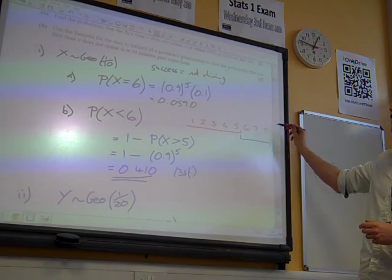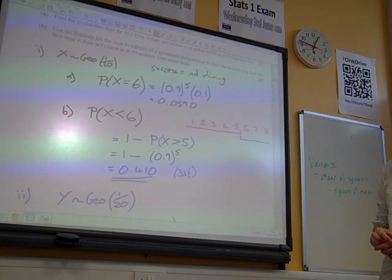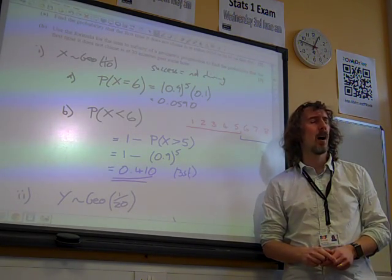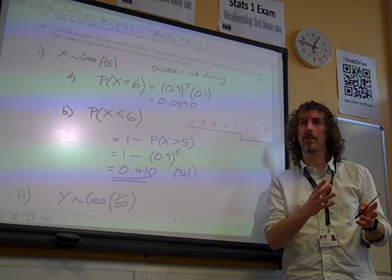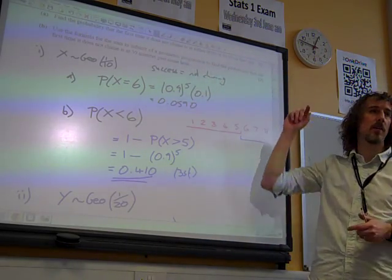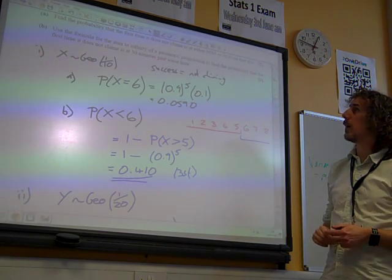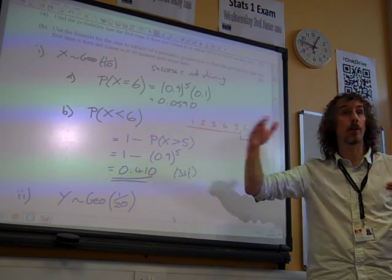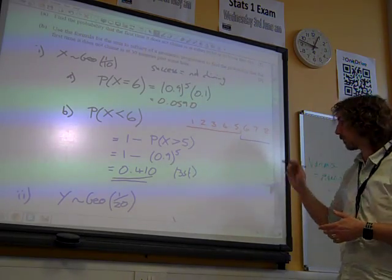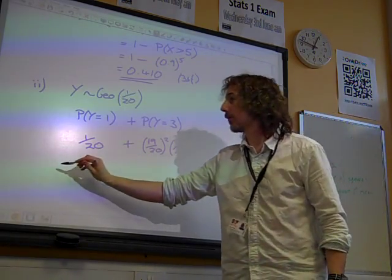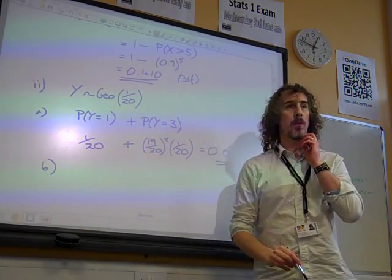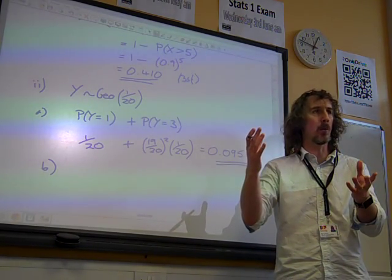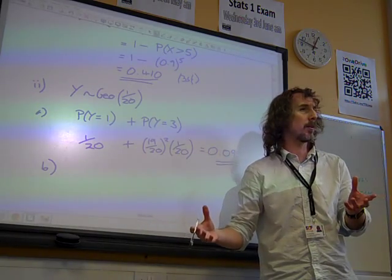In the final bit of the question, use the formula for the sum to infinity of a geometric progression to find the probability that the first time it does not chime is at 30 minutes past some hour. The probability that it would be 30 minutes past some hour just means add up all of the 30 minute past the hour probabilities forever. It's better not to just sit there thinking about it but to actually start putting pen to paper to write down what you think it's talking about.